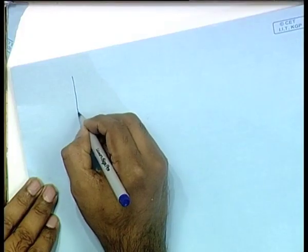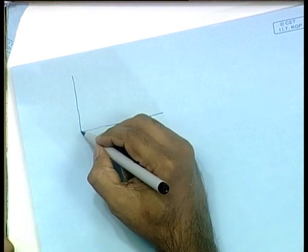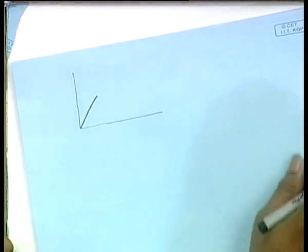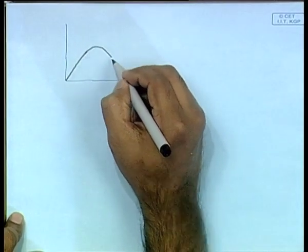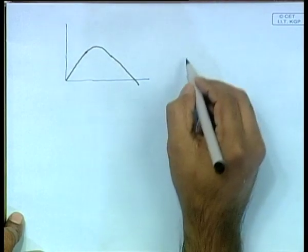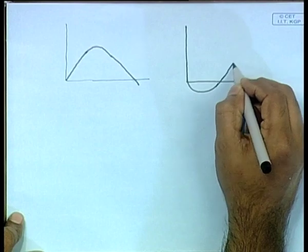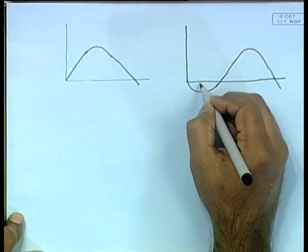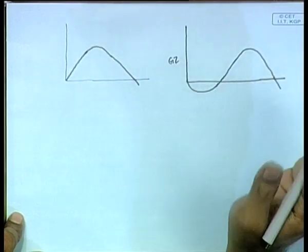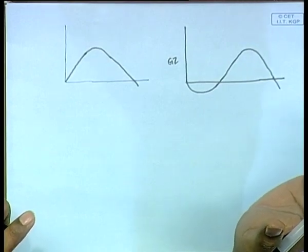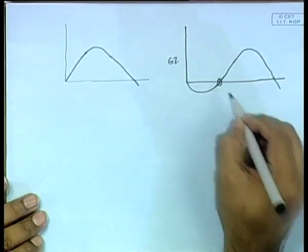We will now continue with the different types of GZ curves mentioned in the last class. The first was a GZ curve indicating a kind of unstable equilibrium. This initial GZ curve indicates a case of stable equilibrium. Then we mentioned a GZ curve indicating lolling. In this region, you have a region of negative GZ, meaning a negative righting arm, which tends to destabilize the ship. Therefore, the ship keeps rotating until it reaches the angle of loll.